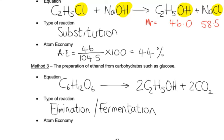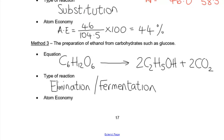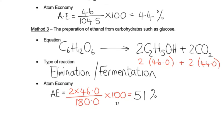Can you work out the atom economy of this method? So just one thing to watch out for here. Although the MR of ethanol is 46, both ethanols are useful. So it's two lots of 46 over all of the products. So it's two ethanols and two carbon dioxides. All of those atoms need to be added up. And we're getting a 51% atom economy.